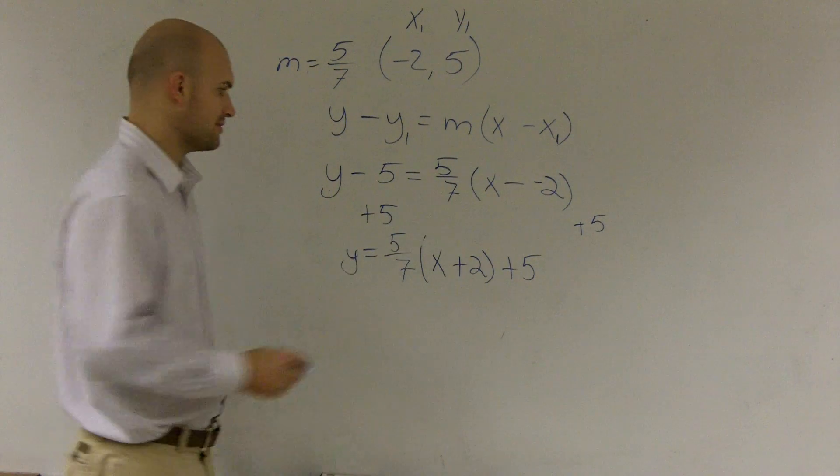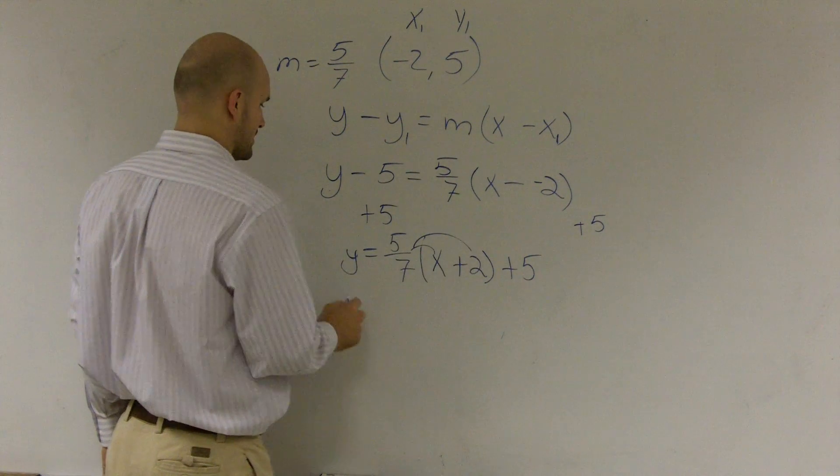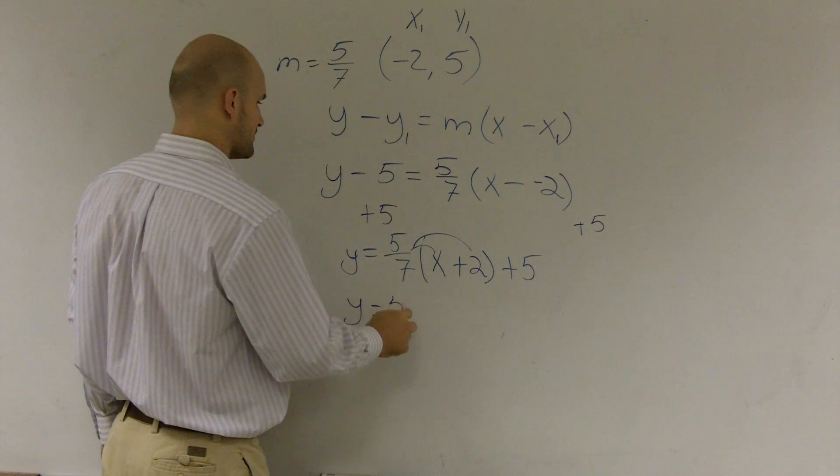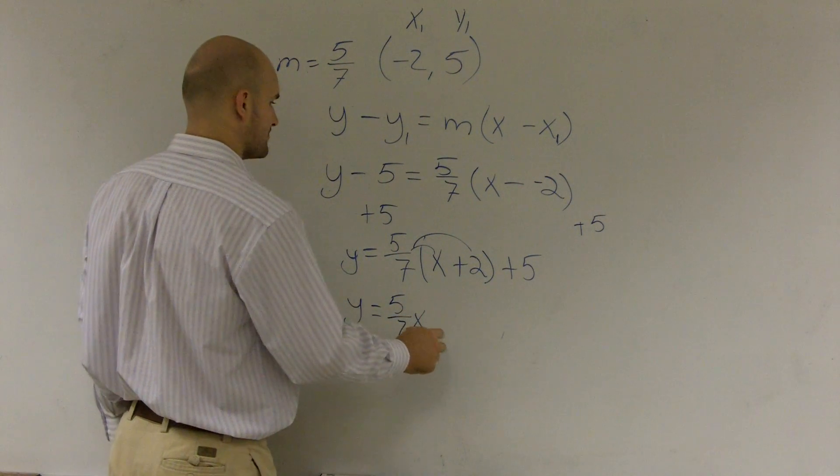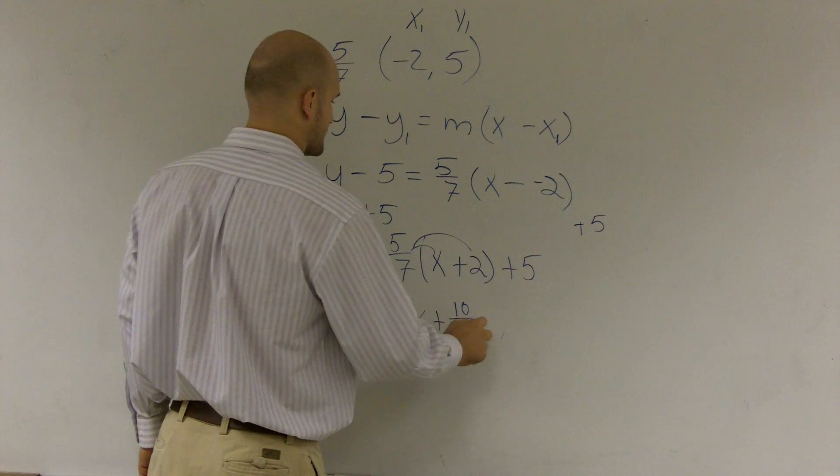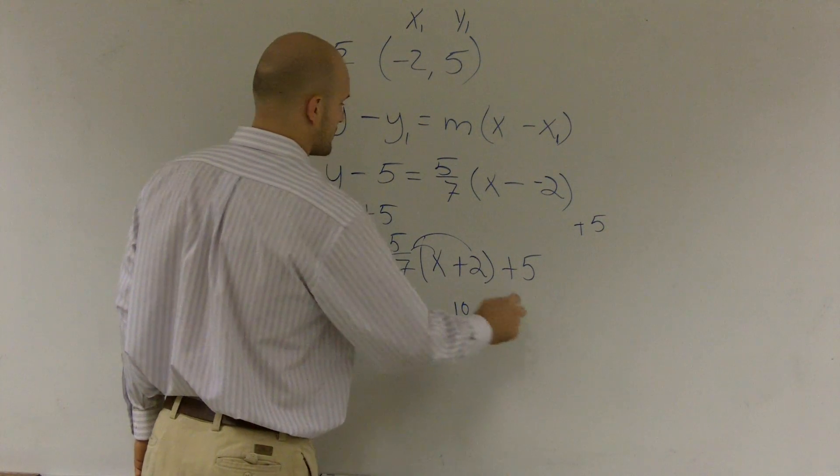Then what I can do is now I can use the distributive property. And I get y equals 5 sevenths x plus 10 sevenths plus 5.